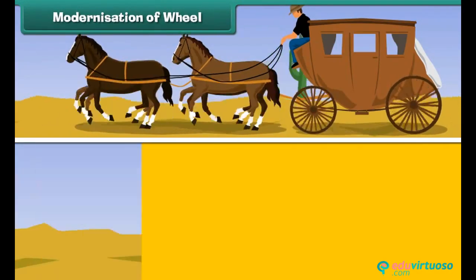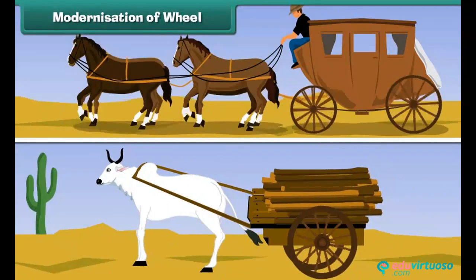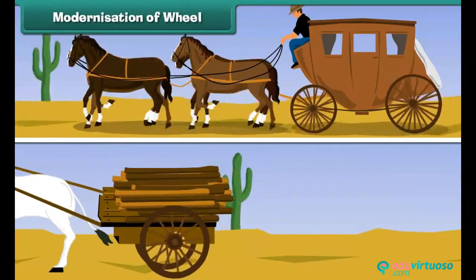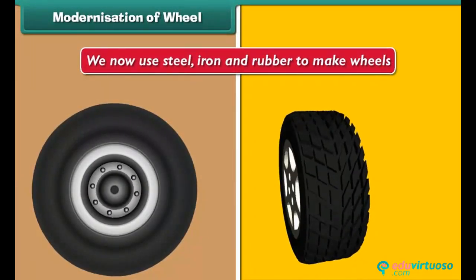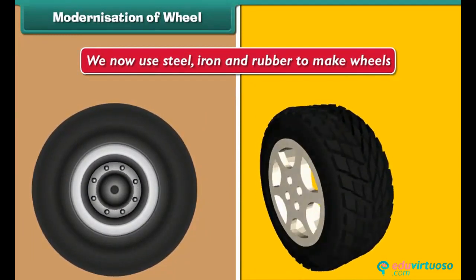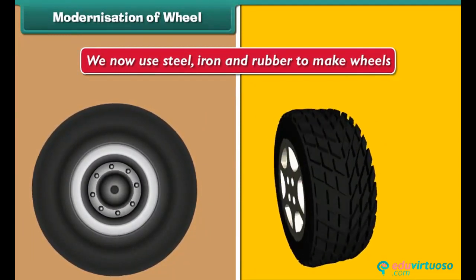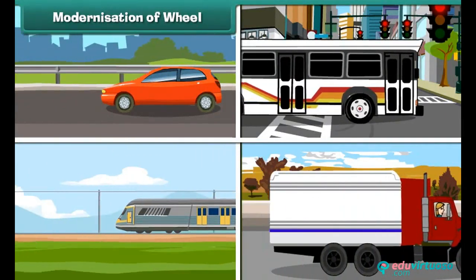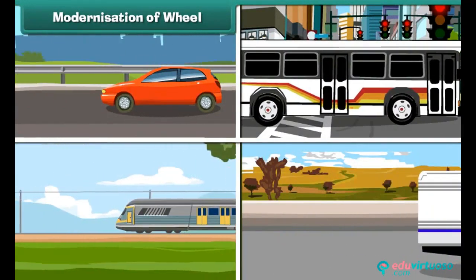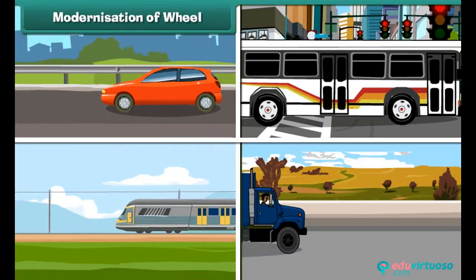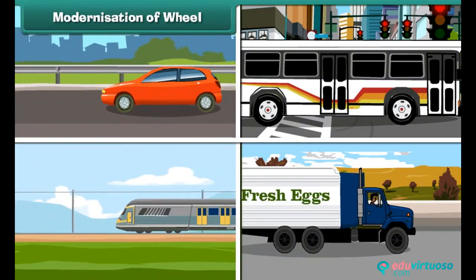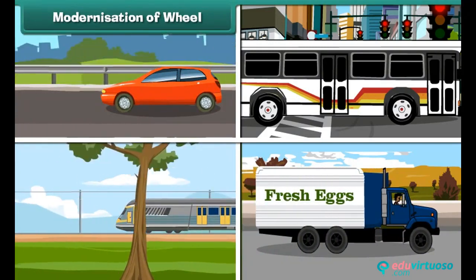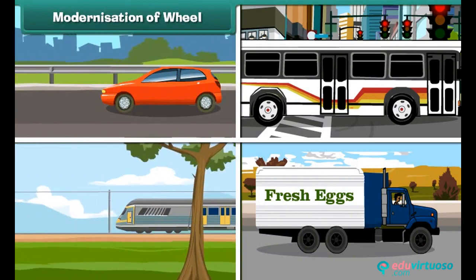Modernization of Wheel. We have come a long way from the days of wooden wheels. We now use steel, iron, and rubber to make wheels. Such wheels are strong and they last long. Wheels have made transportation easy. Therefore, wheels are our friends.